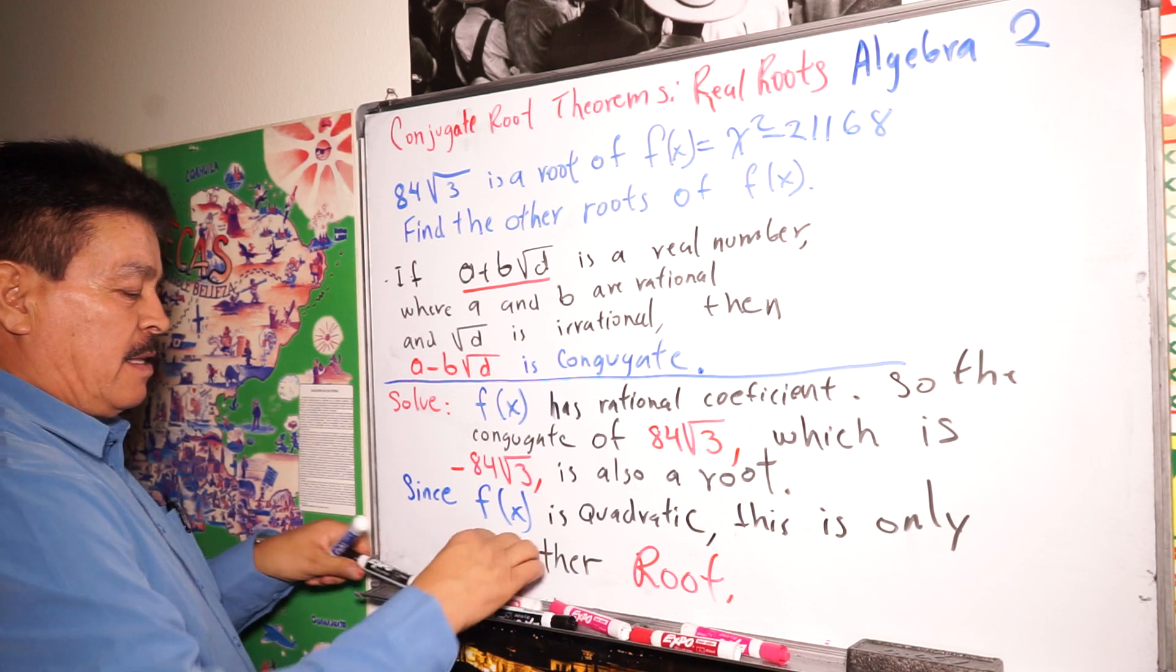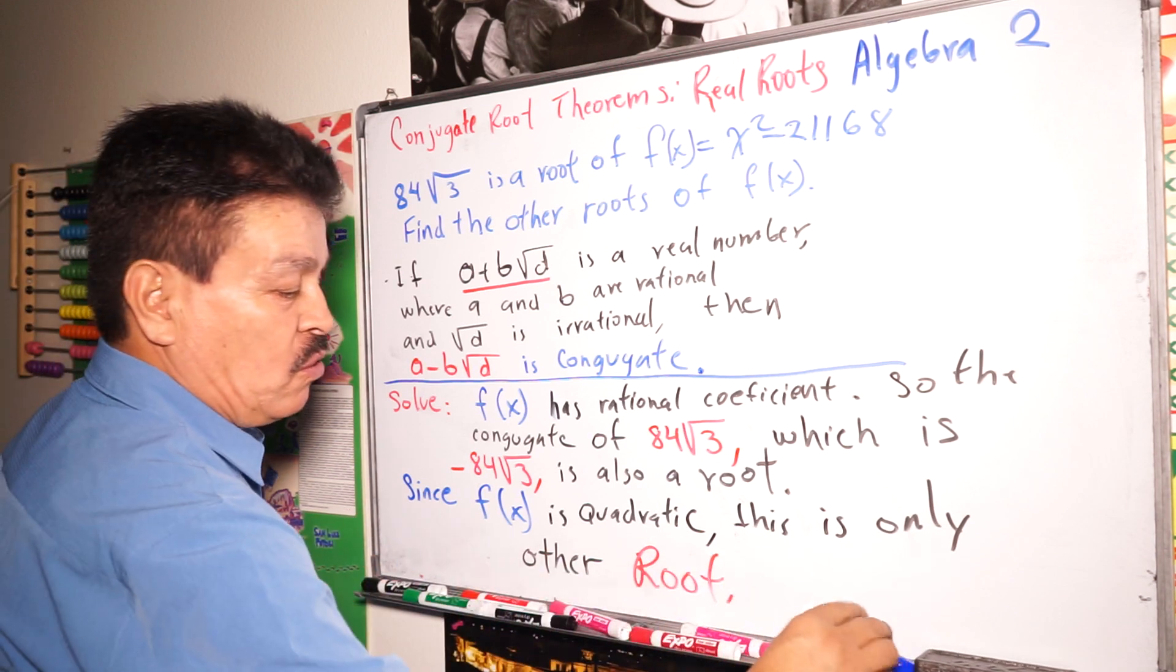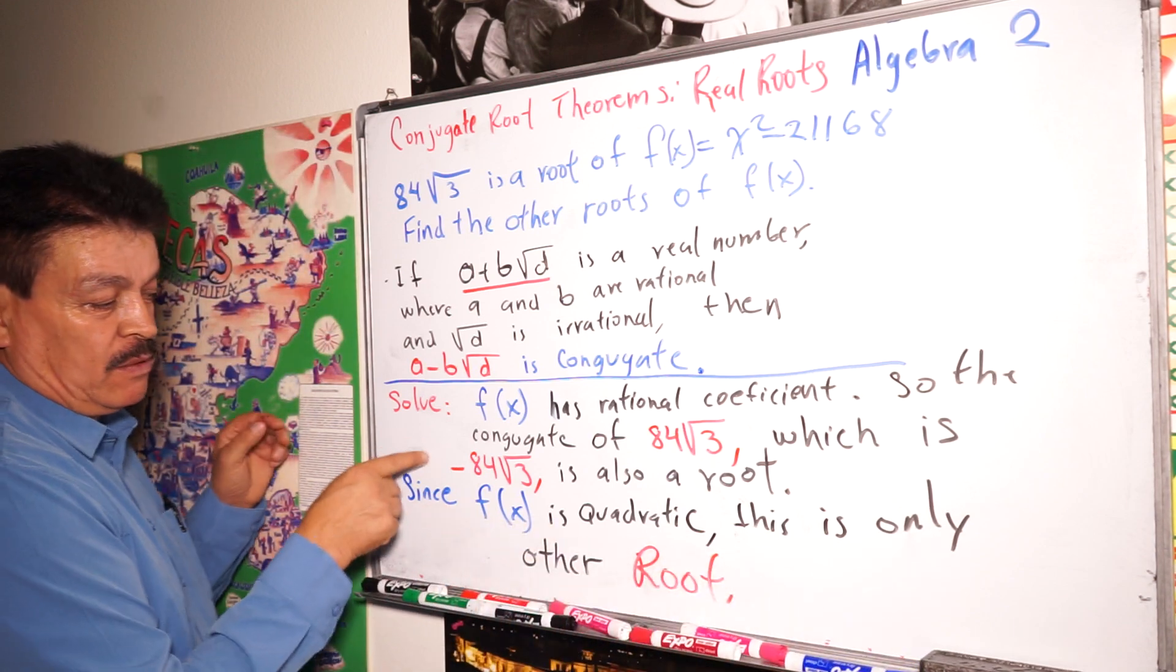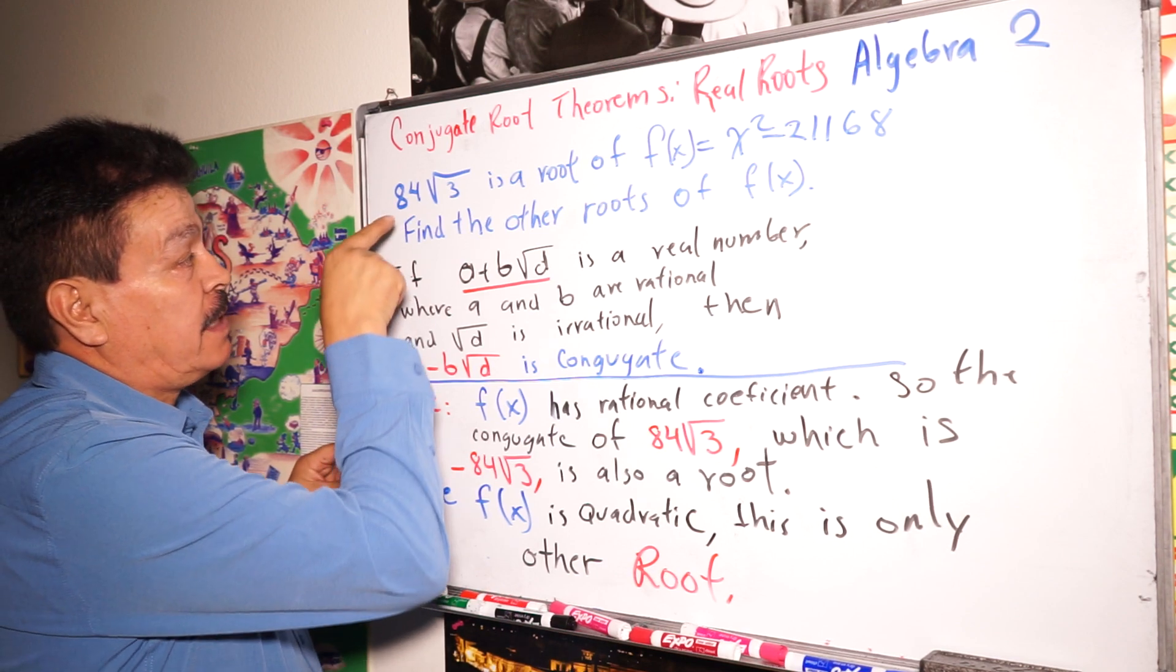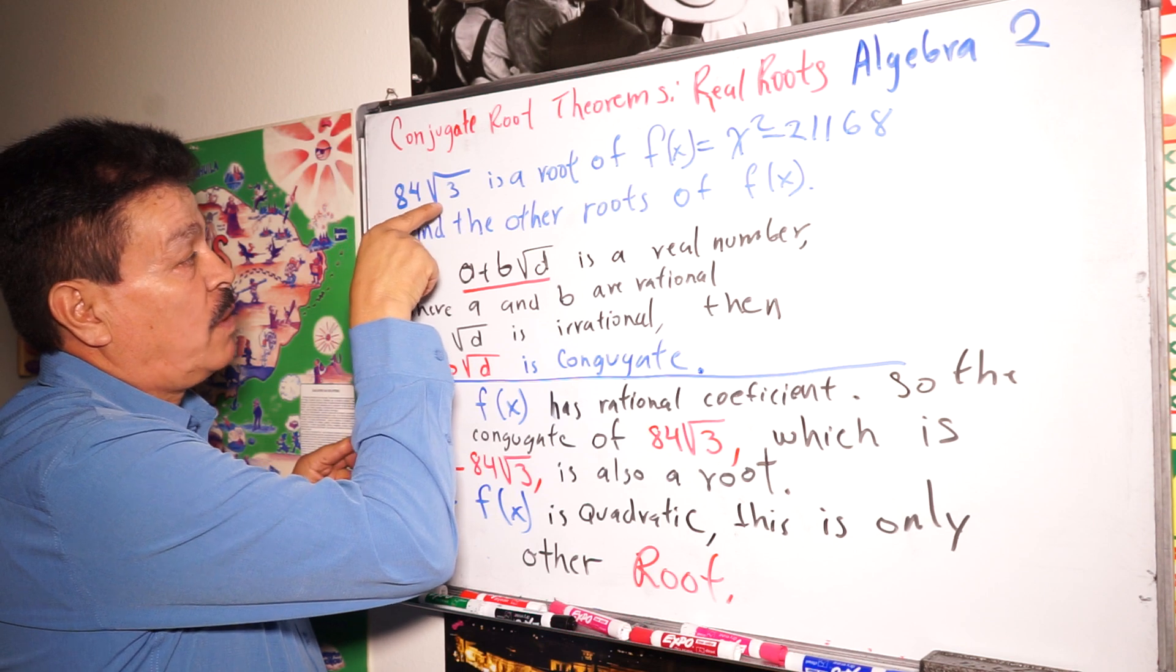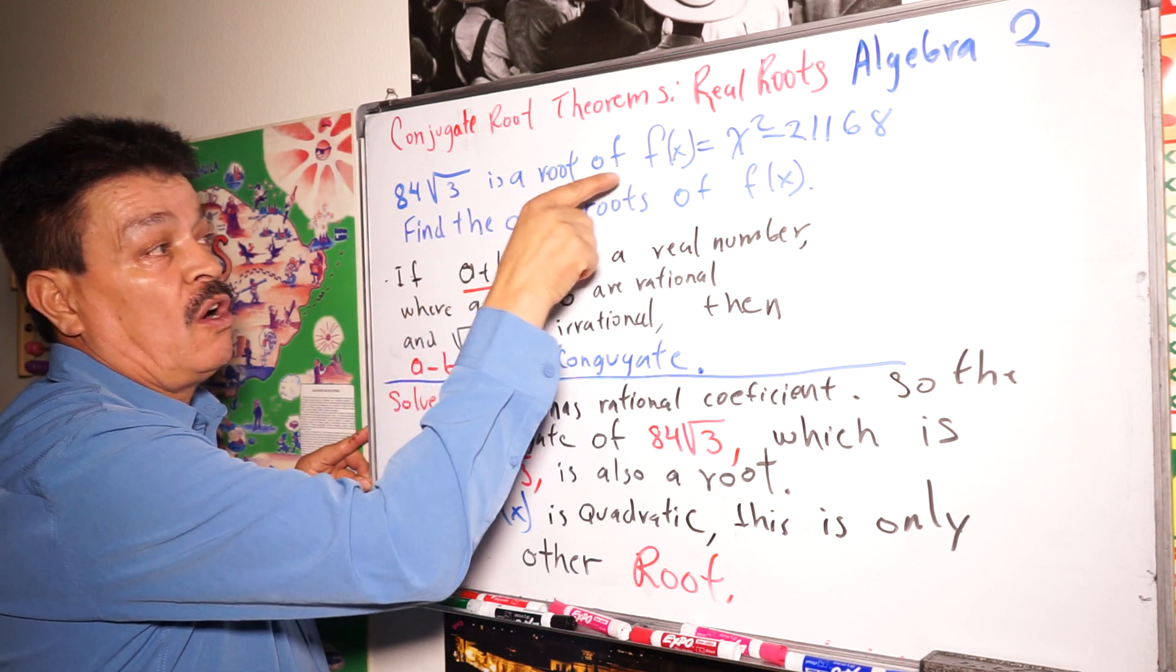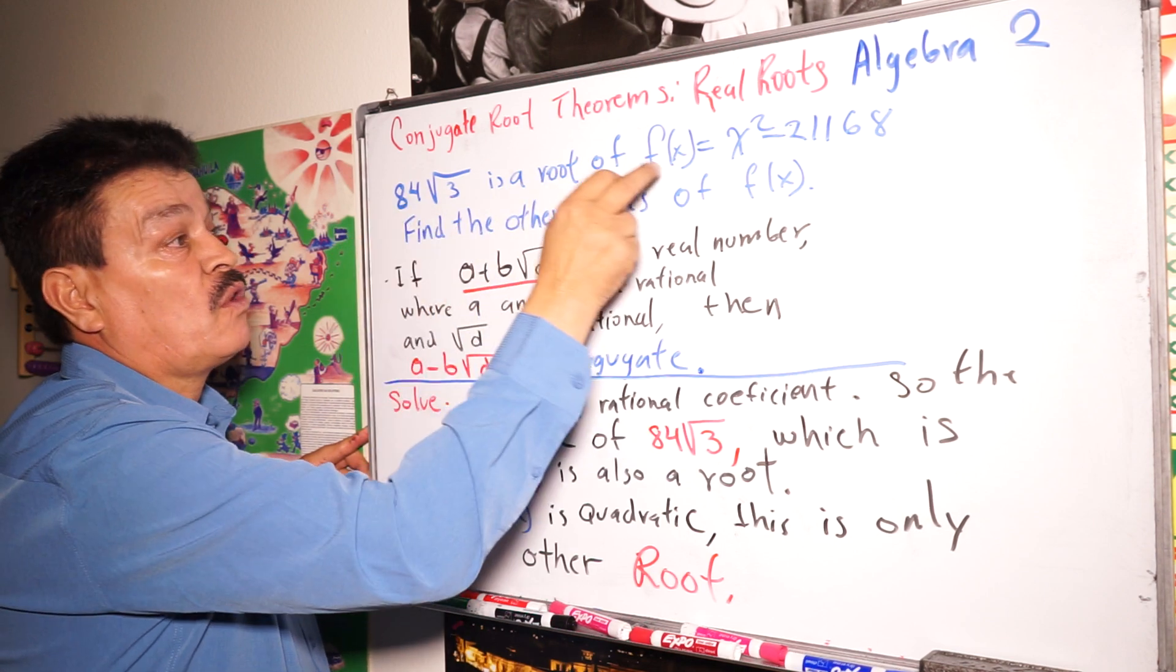This is the conclusion. And also, the solution of our problem. Is this one. See? This is the obvious. This is 84 square root of 3. Is a root of f(x). This is a root of f(x).